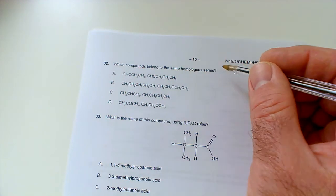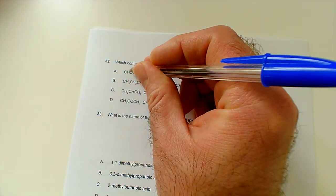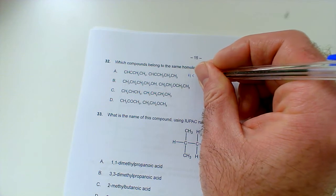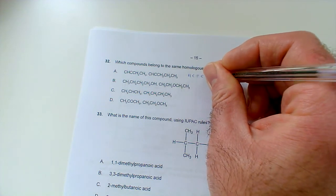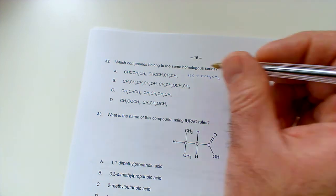Which compounds belong to the same homologous series? Well, let's see if we can sketch some of these out. So, this first one here, we can see we've got a lot of unsaturation there. So, that's basically HC, and then we've got a triple bond, C, CH2, CH3. So, that's but-1-ine, an alkyne.